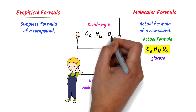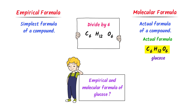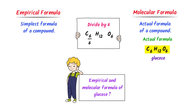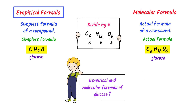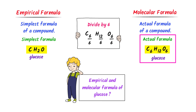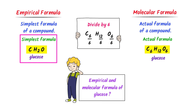Now listen carefully. We can divide the whole numbers of glucose by 6 — the 6 of carbon by 6, the 12 of hydrogen by 6, and the 6 of oxygen by 6. I get CH2O. So CH2O is the simplest formula of glucose, which we call the empirical formula of glucose.